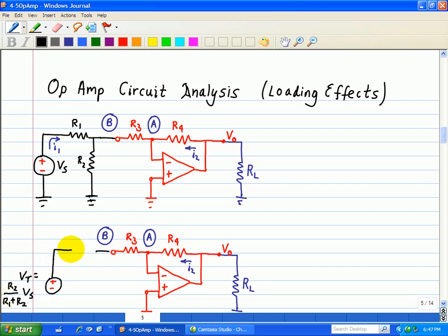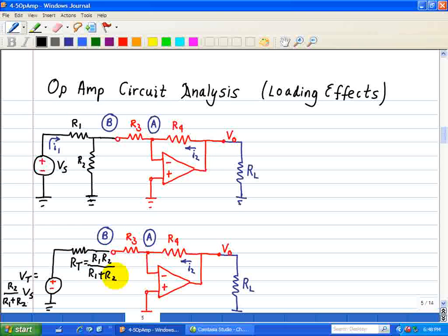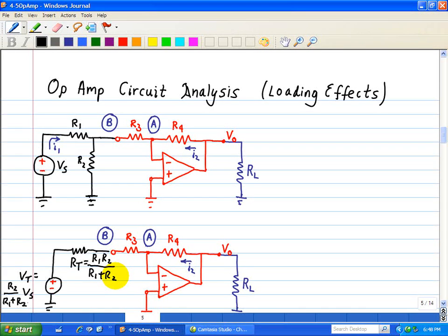And our Thevenin resistance, Rt, is simply, when I short this out, we see a parallel combination, R1 and R2. So what we have is Rt is equal to the product of those two resistors in parallel, R1 and R2, over R1 plus R2, the sum of the resistance. So that's our equivalent Thevenin resistance.